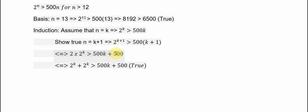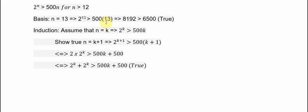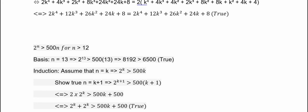Here is another example. We put n equal to 13 because 13 is the lowest positive integer here. We put it in and find it is true on both sides. Then we have n equal to k and n equal to k plus 1. At the end we multiply 2k — 2k is greater than 500k. We put it in, and since at k equal to 13 we get 8192 which is greater than 500, this is true. That's the end — thank you for watching.